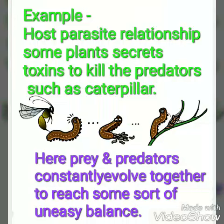There are some examples of this hypothesis, like the host-parasite relationship. Some plants secrete toxins to kill predators such as caterpillars. Prey and predators constantly evolve together to reach some sort of an easy balance. If the plants want to survive, then